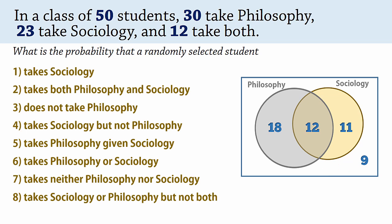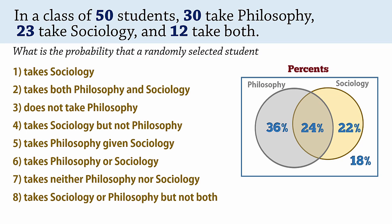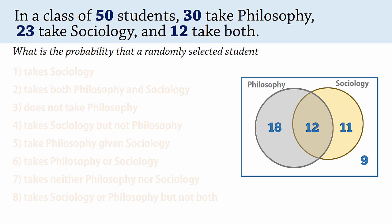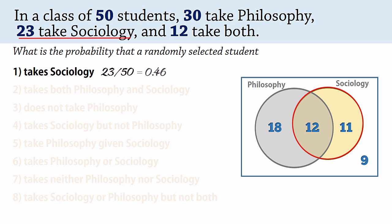We can convert them to probabilities if we want, or to a percent, but I'm just going to leave them as numbers. Number 1: since 23 students take sociology, the probability that a student takes sociology is simply 23 divided by 50, which is 0.46.